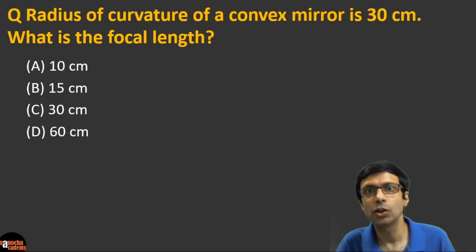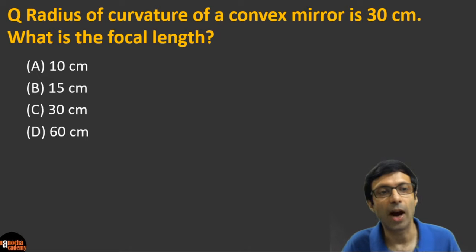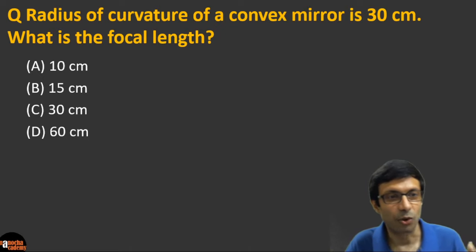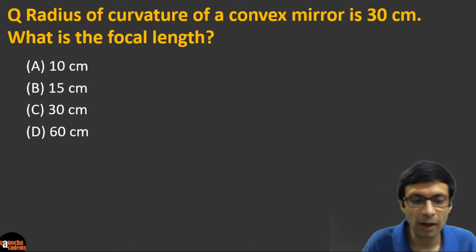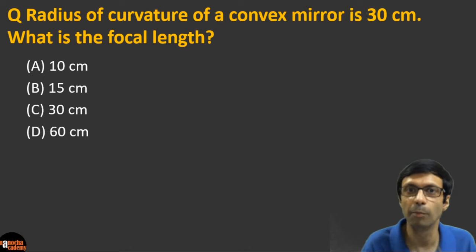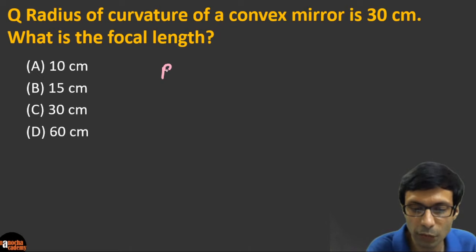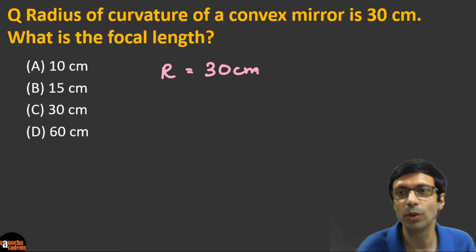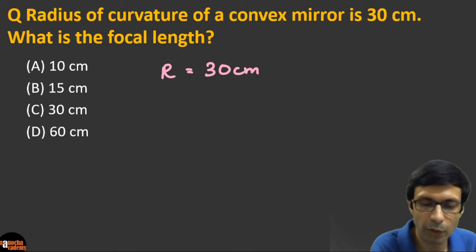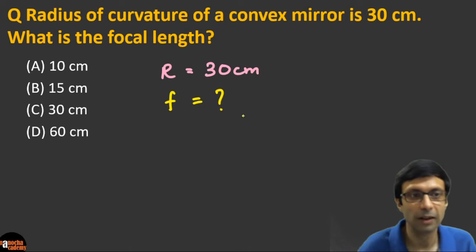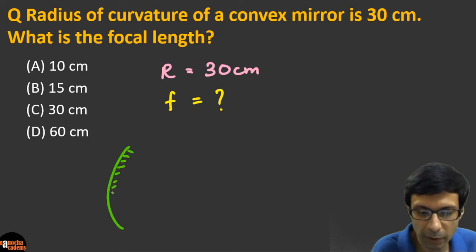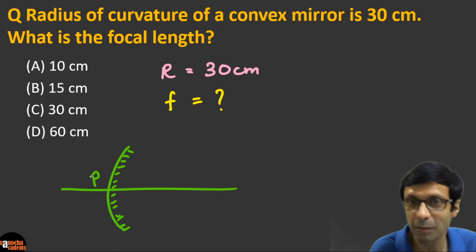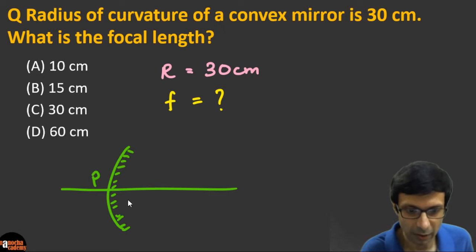Next question: the radius of curvature of a convex mirror is 30 cm. Find the focal length. Given: R = 30 cm. We need to find focal length f. For these types of questions, always write it in symbol form first.